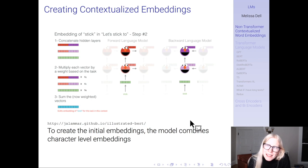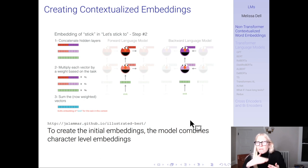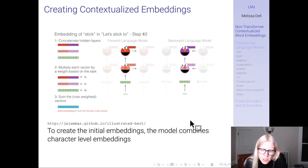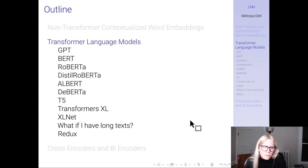So that's ELMo. It uses an LSTM, generating representations by feeding the sequence sequentially and predicting what comes next. As you advance through the sentence — or go backwards in the case of the backward language model — you carry along hidden states representing the context. This is very much taking what we saw last week and using it to create contextualized embeddings, and it was quite an influential model.